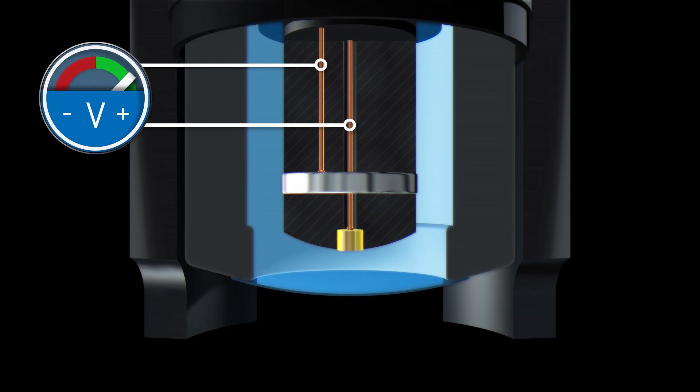The cathode and anode are located in a reaction chamber that is filled with an electrolyte. The reaction chamber is separated from the medium by a membrane. This porous membrane allows dissolved oxygen to diffuse into the sensor.